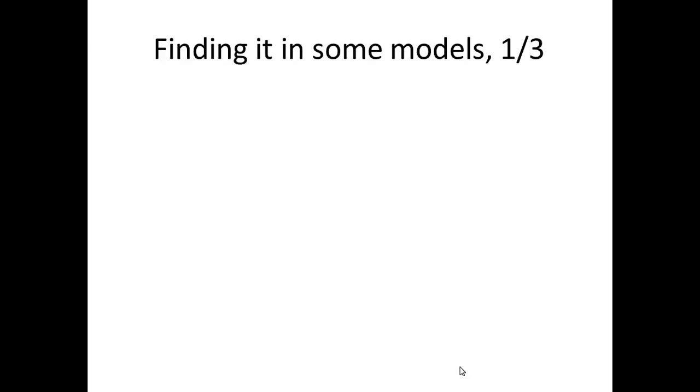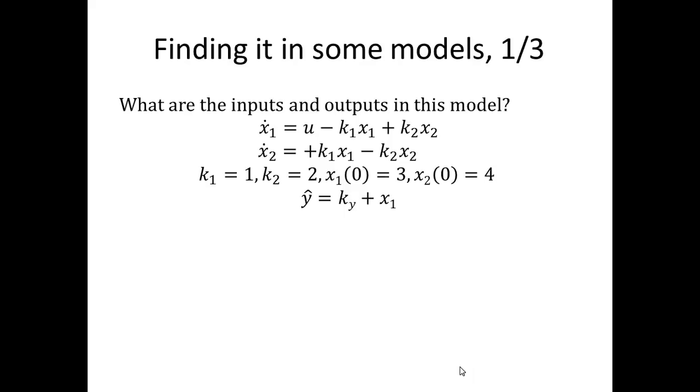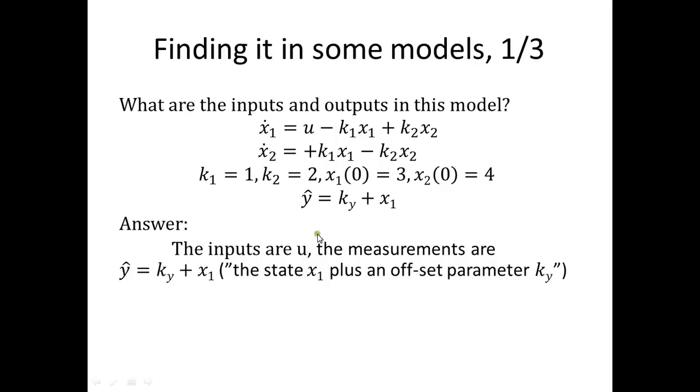Now let's look at these three examples again, and let's look at these final two things: the inputs and the outputs. In this first example we have it in the state-space form, two differential equations, some measurement equation, and some other definitions. The inputs are easy to recognize in this course because we call them u, so we just look for the symbol u here. The outputs are also easy to recognize because they are called y-hat.